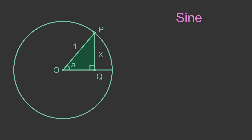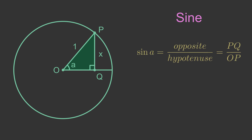To understand how the sine function relates to the chord of a circle, we can draw a triangle within a unit circle. The right-angle triangle P-O-Q has an angle A at the centre. The hypotenuse OP has a length 1 because it is the radius of a unit circle. The side opposite angle A has length X. The definition of the sine function is opposite over hypotenuse, which in this case is PQ over OP. Substituting the values of X for the opposite and 1 for the hypotenuse, sine A equals X over 1, which simplifies to X.